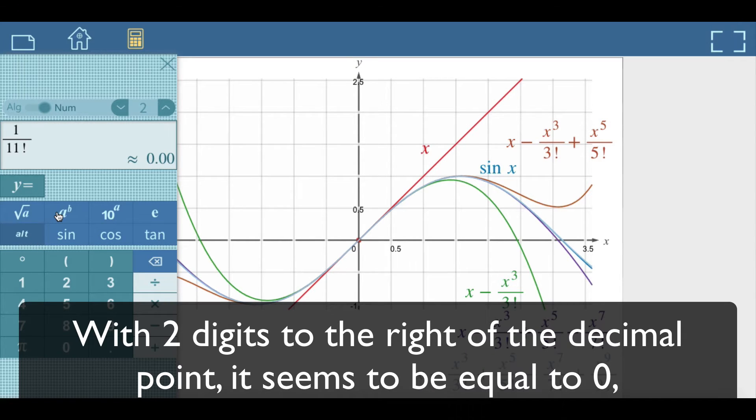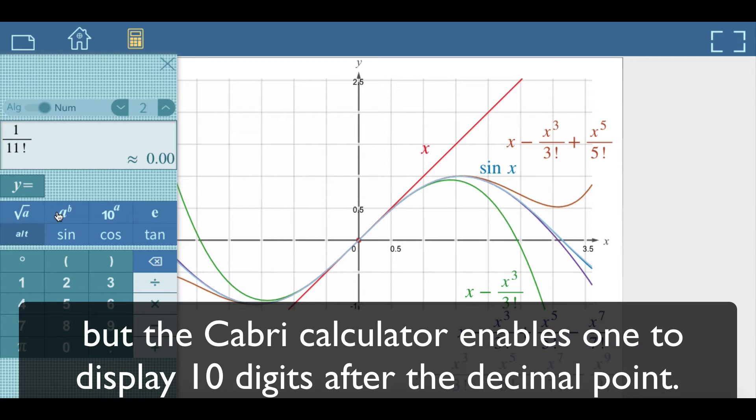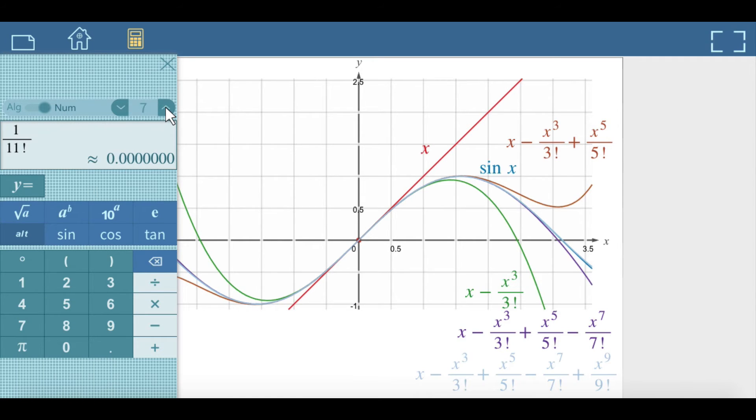With two digits to the right of the decimal point, it seems to be equal to zero, but the Cabri calculator enables one to display 10 digits after the decimal point. It confirms that the Taylor polynomial of degree 9 is a good approximation on this interval.